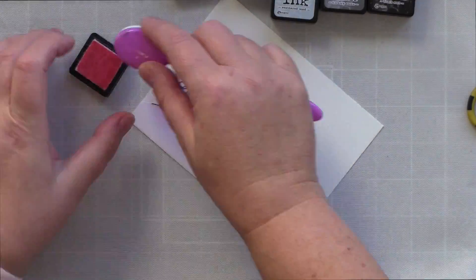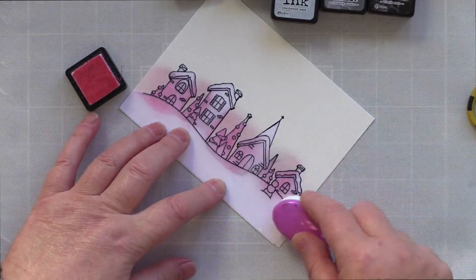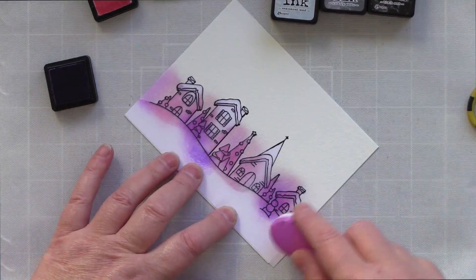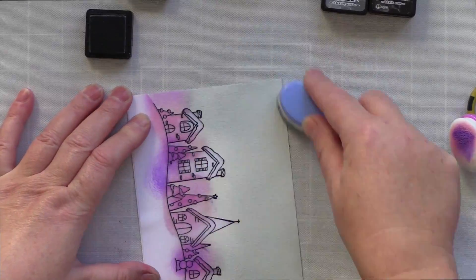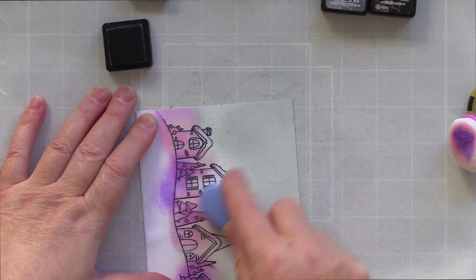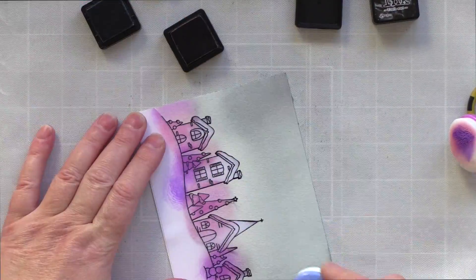I started with the pinks and purples and gently blended them around the houses. Then working from the top of the card, I blended Weathered Wood, then Hickory Smoke, then Black Soot. Finally, for that hint of blue I mentioned, I added in Stormy Sky.